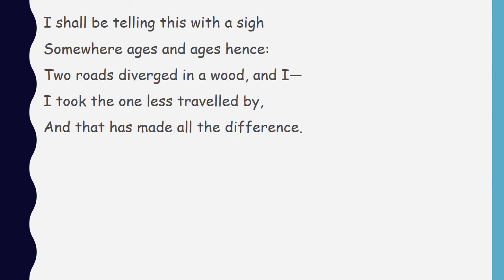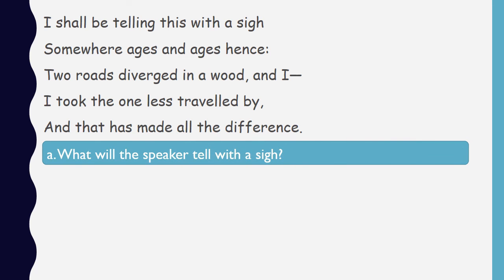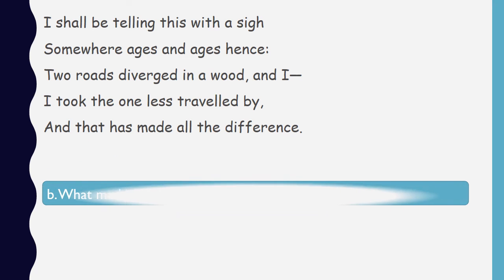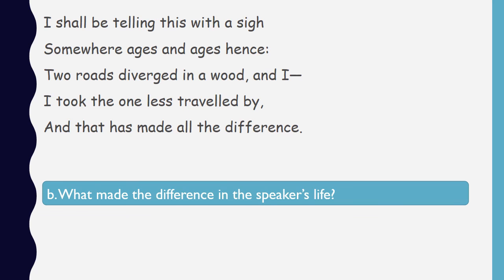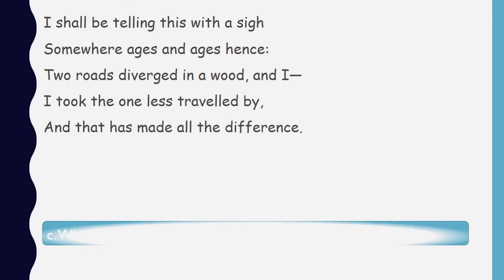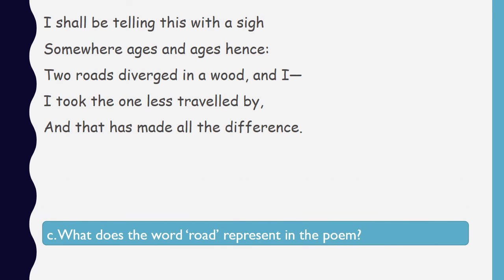Questions for the final stanza. What will the speaker tell with a sigh? What made the difference in the speaker's life? We discussed this point at length in the video on the analysis of the poem. What does the word 'road' represent in the poem? This is a very important question.